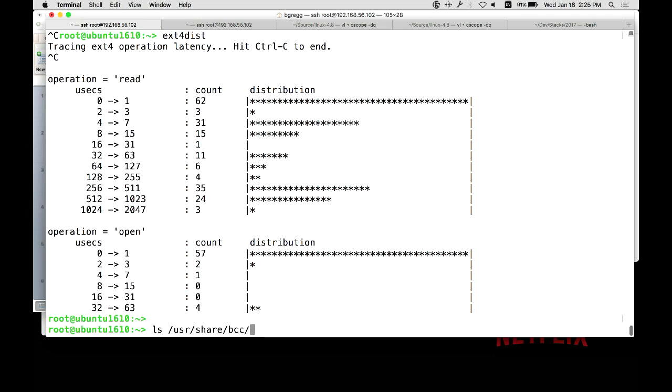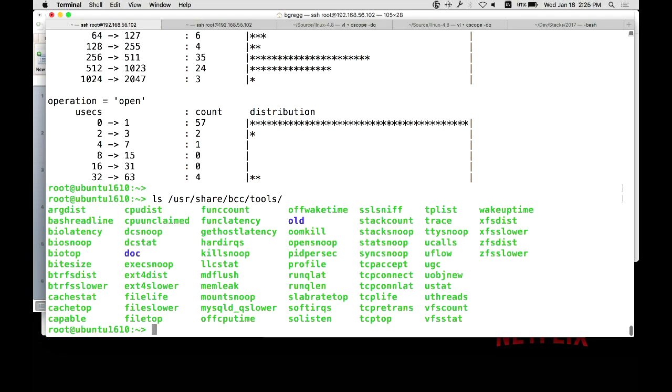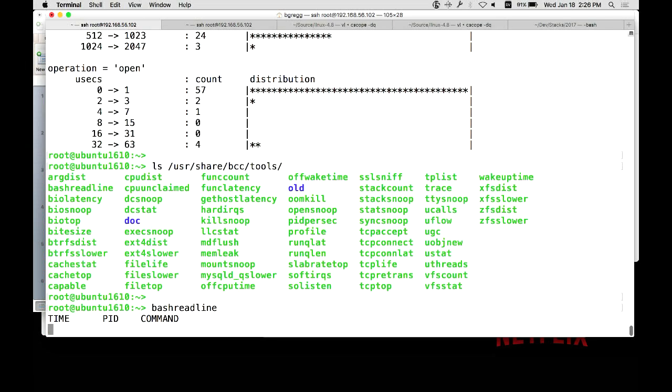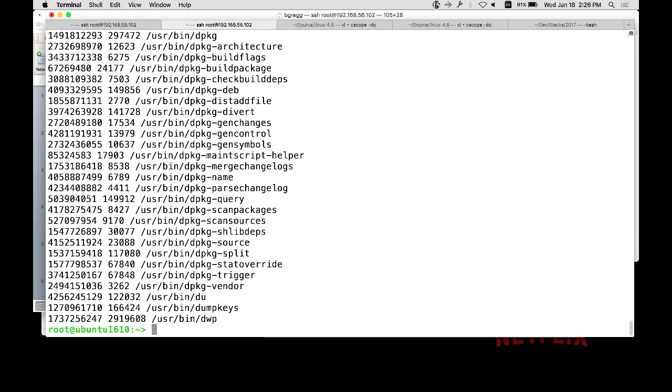There's many of these single-purpose tools already available for BPF. And if you install BCC, which is a collection of these tools on your system, they get put under /usr/share/bcc/tools. I wrote many of these. I like to write specific single-purpose tools, similar to the Unix philosophy of doing one thing and doing it well. Another one I want to demonstrate, since I just did some kernel tracing, is an example of user-level tracing. So bash readline.